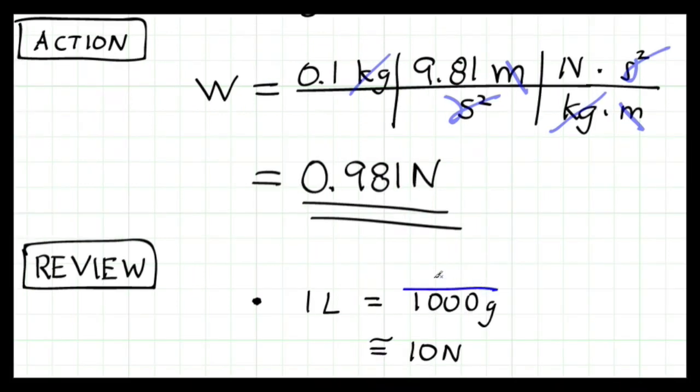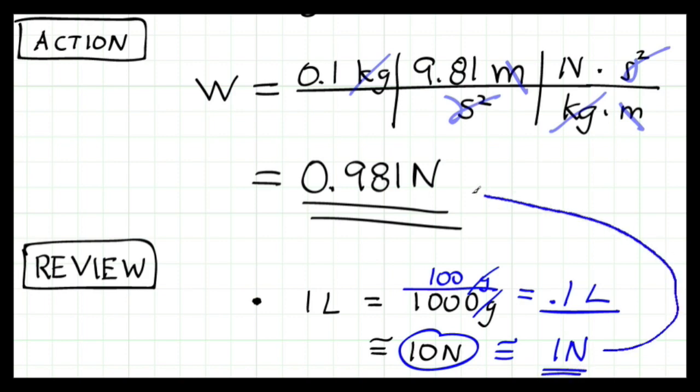And it is also equal to very close to 10 Newtons of weight. Since this problem involved 100 grams of water, I can see that I have a tenth of a liter, 0.1 liters of water. So I expect that the weight of this is 10 Newtons divided by 10, or very close to 1 Newton. And so I can see that my answer comes out to be very close to 1 Newton.